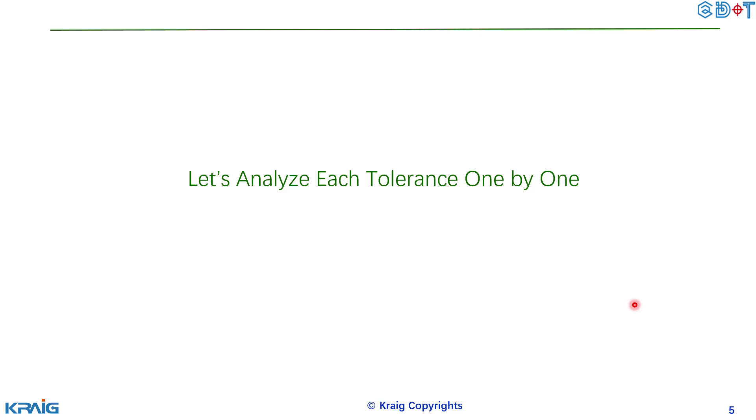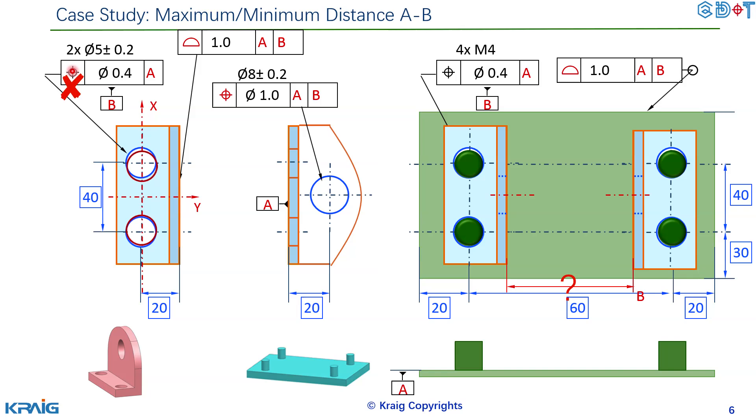With each tolerance, which one we should use and which one we shouldn't use. This one first, the position tolerance 0.4 A. This position tolerance controls the distance between this one and this one. So you can see the distance is changing. However, doesn't matter how this distance change, it won't affect the distance between here and here because the datum B is two holes.